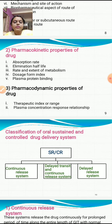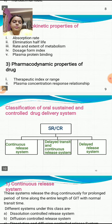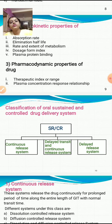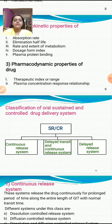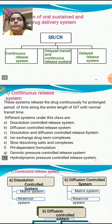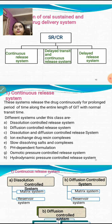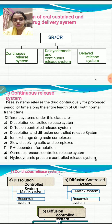The classification of oral sustained and controlled drug delivery systems comprises three types: the continuous release system, the delayed transit and continuous release system, and the delayed release system. Both sustained release and controlled release systems fall under one of these three categories.